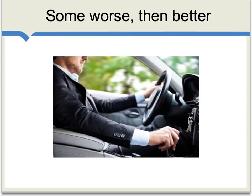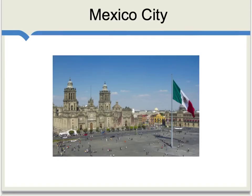Some environmental problems first become worse with wealth and then become better. Imagine a country that becomes wealthier and then has cars — in the short run, air pollution goes up. As the country becomes wealthier, they tend to ban leaded gasoline, and then the air becomes cleaner again. Mexico City is an example of a region that has become significantly wealthier and also moved toward much cleaner air.